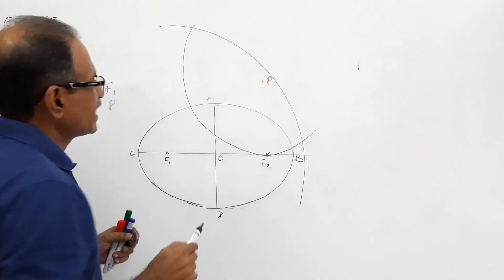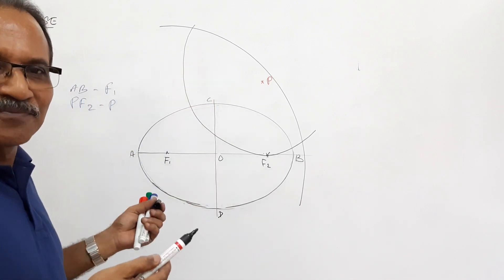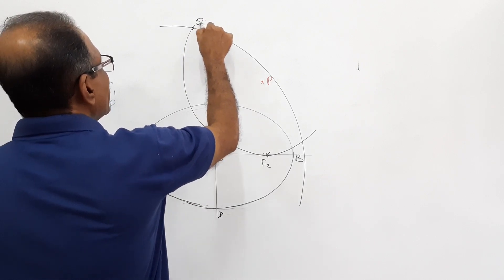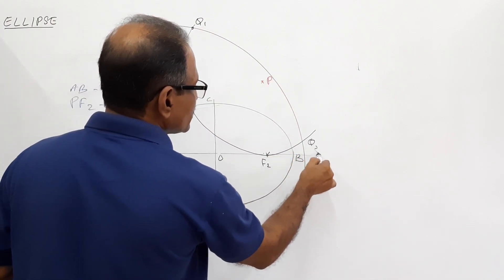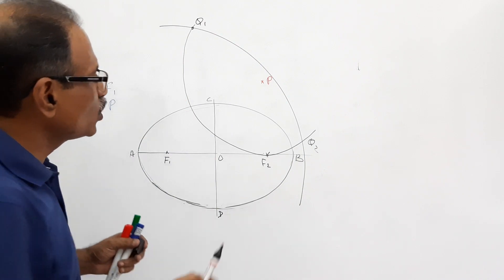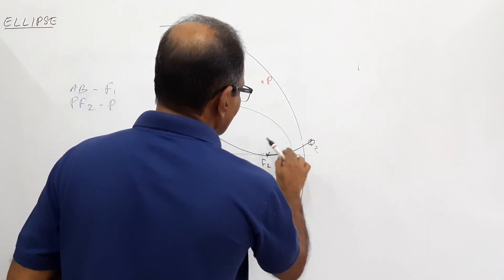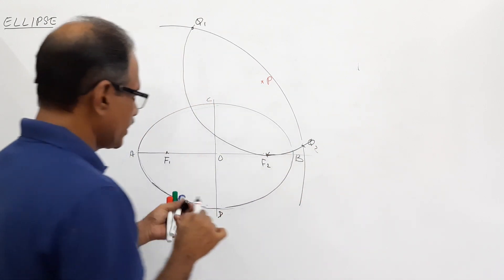Since I am not following compass, my arc may not look good, but you have to manage. This is Q1 and this is Q2. What are Q1 and Q2? Those are the points where the two arcs intersect. The two arcs meet at Q1 and Q2.